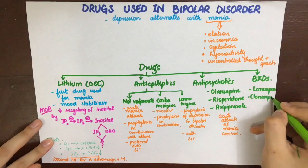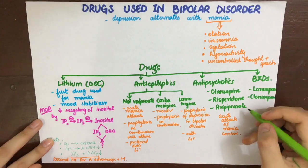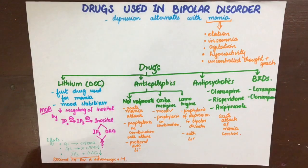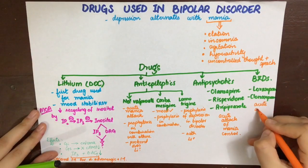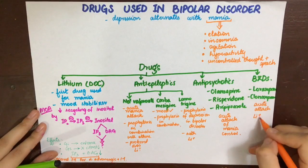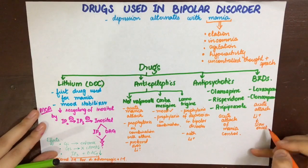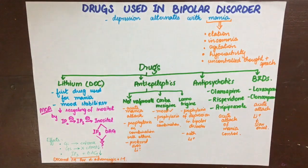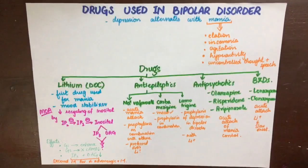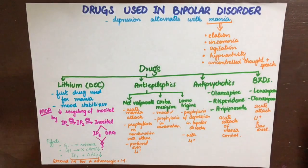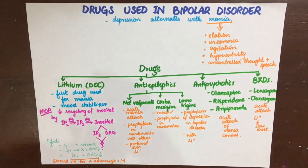Benzodiazepines can also be used because they accentuate GABA-A receptor activity and thus promote CNS depression. The chief benzodiazepines used are lorazepam and clonazepam. They are mainly used to control an acute attack because lithium has a slow onset of action.